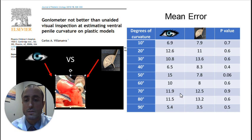With these models, we conducted a study comparing visual estimations of curvature to goniometry estimations on 25 pediatric urologists attending the SPU conference in San Francisco a few years ago. Goniometry estimations were not better than visual estimations in that study.